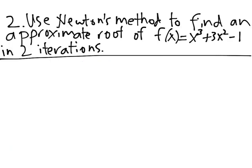Problem 2: Use Newton's method to find an approximate root of f(x) = x³ + 3x² − 1 in two iterations. If we plug in x = 1, we get f(1) = 1 + 3 − 1 = 3, which is relatively close to 0, so let's start with x₀ = 1.